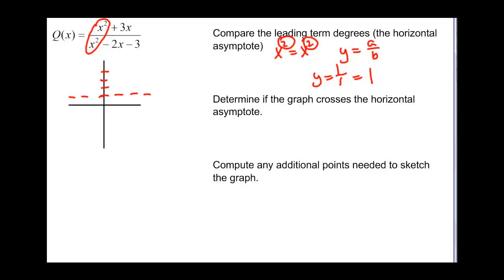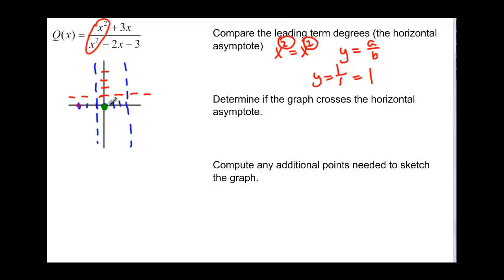Let's put in what we learned. Our vertical asymptotes are at x = 3 and x = −1, and our horizontal asymptote is y = 1. We also found that the y-intercept is (0, 0) and the zeros of our graph are at x = −3 and x = 0.